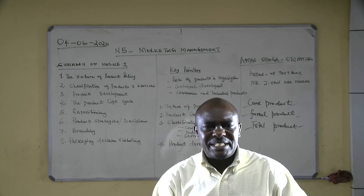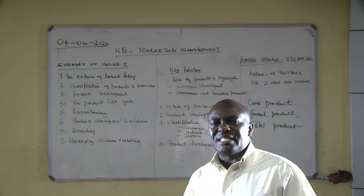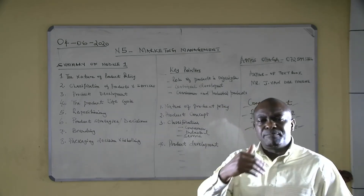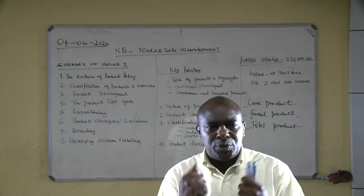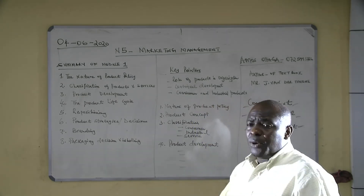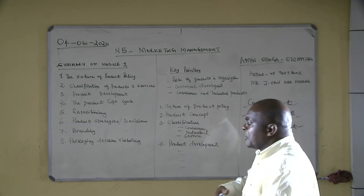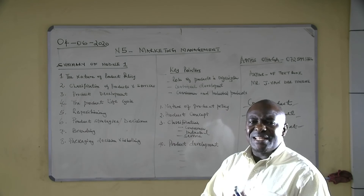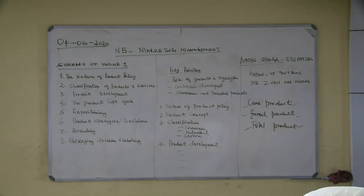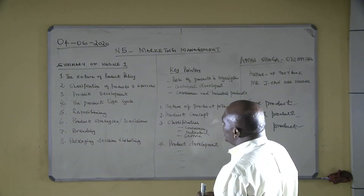The last category under classification is service, which is also a product. People come up with ideas to provide services. For instance, we have consultants and management, doctors, lawyers, insurance companies — these are organizations that provide a service and that service is a product. People will be able to buy it or will be in need of it, so they are able to offer that type of service.